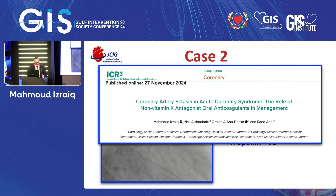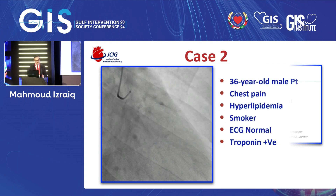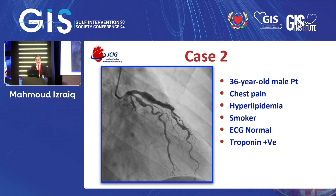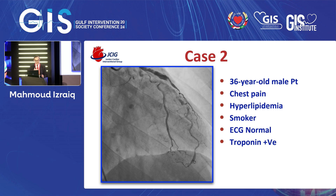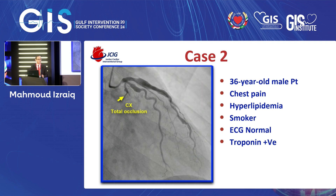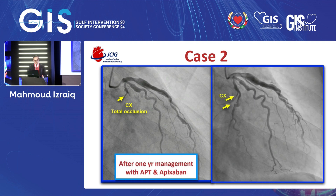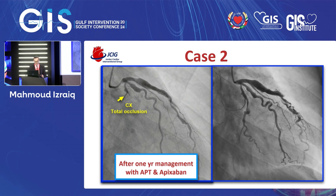This is very interesting — I published this in the IC3 journal and it was accepted and published yesterday. We have two cases. The first is a 36-year-old male who presented with chest pain, very high cholesterol, heavy smoker, normal ECG, and positive troponin. There was total occlusion of the circumflex. I decided to treat the patient with dual antiplatelet therapy plus apixaban. After one year, the flow was completely restored.